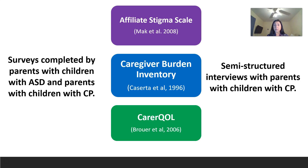These were the scales completed by the parents. The affiliate stigma scale enables caregivers to quantify their internalized stigma across the cognitive, affective, and behavioral domains. The caregiver burden inventory assesses a caregiver's burden across five domains of life. The care quality of life scale asks caregivers to rate their current life situation across seven distinct domains. For parents of children with cerebral palsy, they also filled out the gross motor functioning scale family report, which assesses a child's level of functioning — the lower the score, the more effectively the child functions.